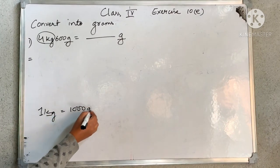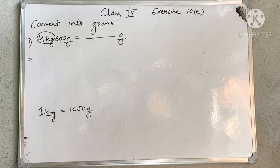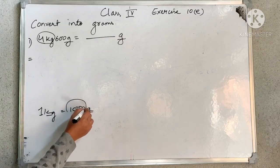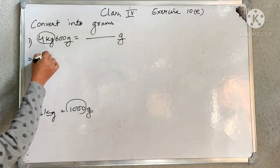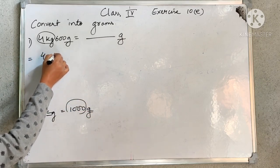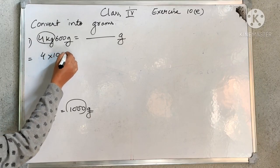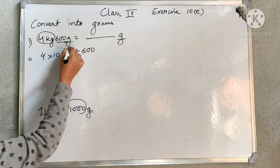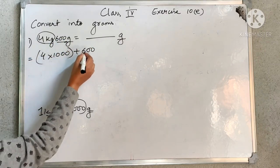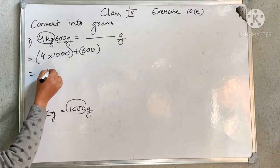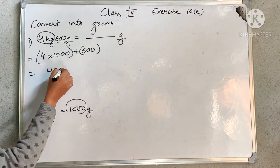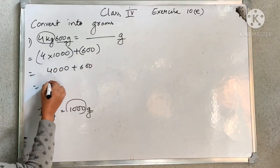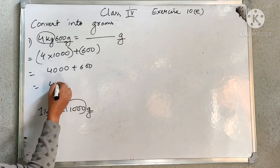Big to small means you will be multiplying — multiplying by 1000. So 4 you will be multiplying by 1000, and this gram part you will be adding as it is. So 4 multiplied by 1000 is 4000, plus 600 it will be 4600.